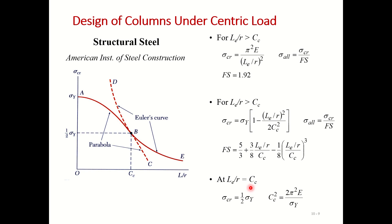For any design, first find the equivalent length, then the radius of gyration, then calculate Cc. Compare L/r with Cc: if L/r is greater than Cc, use the Euler-based equations; if less than Cc, use the parabolic empirical equations. In each case, use separate equations to find the allowable stress and factor of safety — ultimately finding sigma critical and sigma allowable directly from the empirical relations.